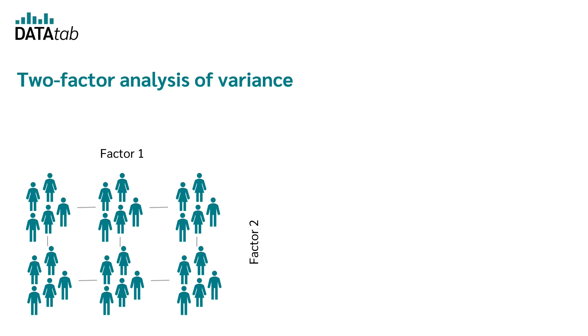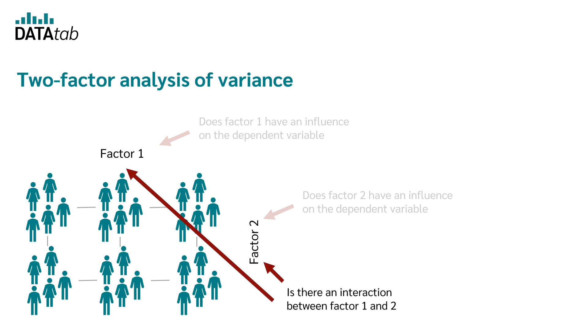With the help of the two-factor analysis of variance, you can now answer three things. Once, whether the first factor has an influence on the dependent variable. Once, whether the second factor has an influence on a dependent variable. And then you can also make a statement whether there is a so-called interaction effect between the two factors.